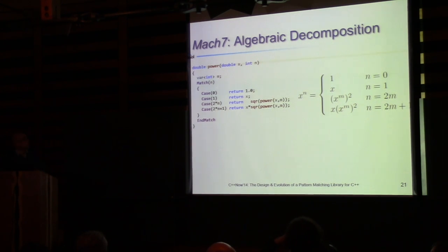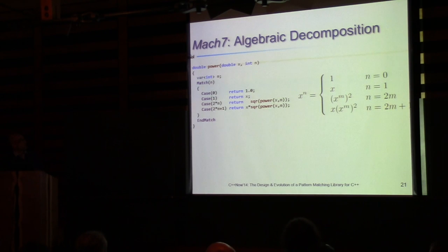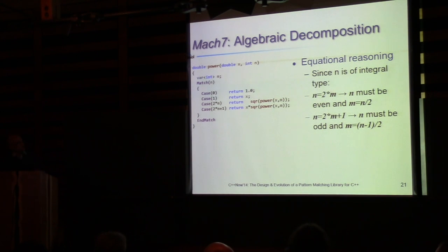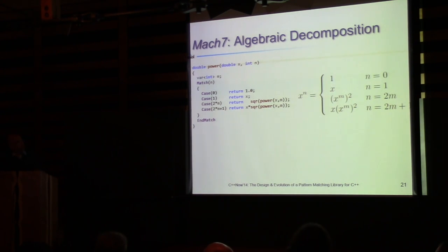Here's an example of decomposing an integer: the fast power algorithm. This is how it's described in textbooks, and this is how you do it in Mach7. The expression '2*m' in a case means it matches only even numbers, with m taking the value n/2 on the right-hand side. The expression '2*m+1' matches only odd numbers, with m taking the value (n-1)/2 — giving exactly the same notation as the textbook.